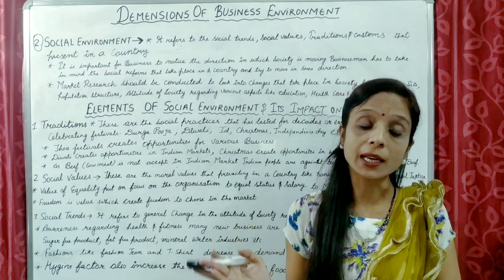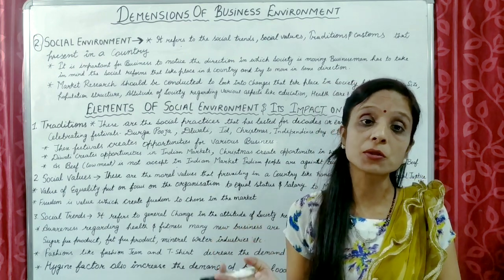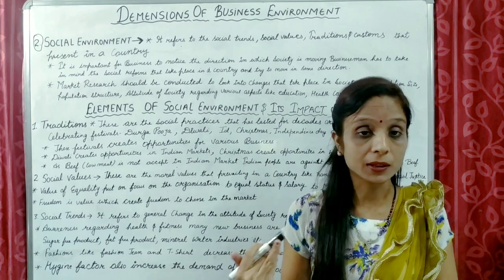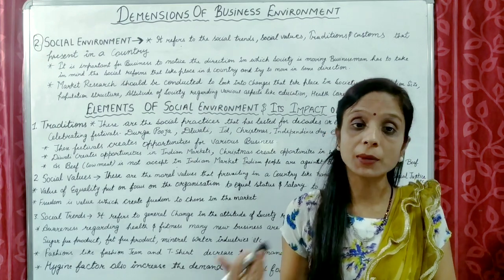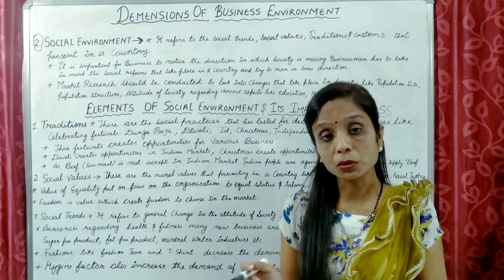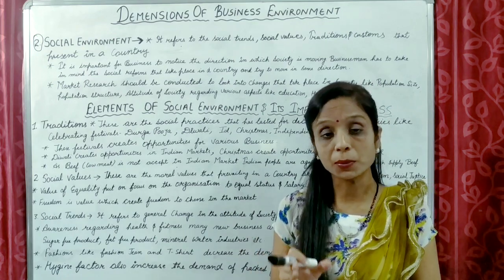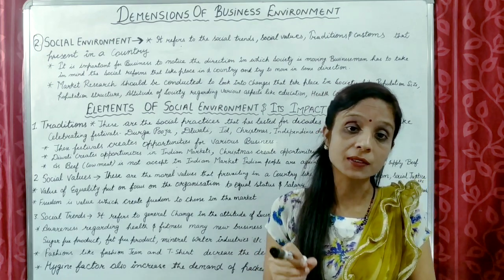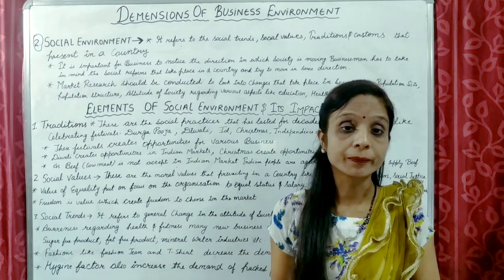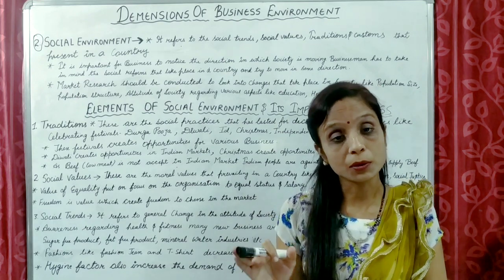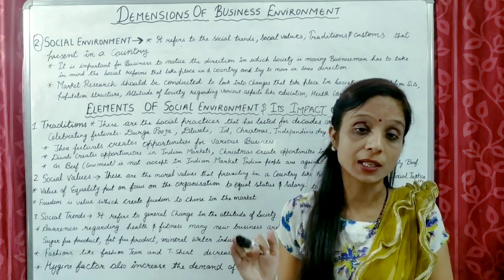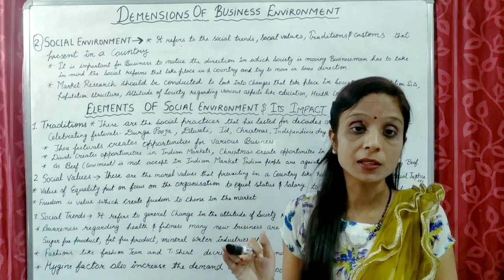For example, if in a country like Japan, old age people are more, and the producers make products suited for young generation, then their product won't sell much because the maximum people are old age. So they need to make products according to the population structure. If people are uneducated, then also the businessman needs to understand the culture and preferences of that place.